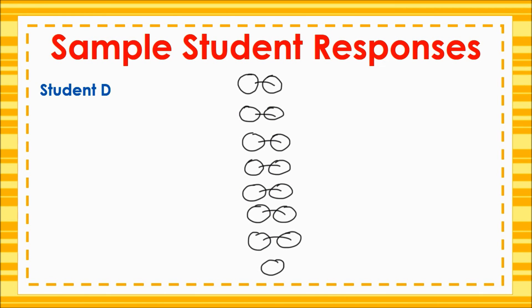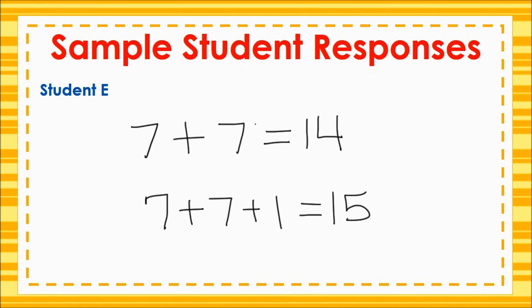Student D says: I drew 15 circles. I matched one on the left with one on the right. I have one circle left over, so I know that 15 is an odd number. Student E says: I know that 7 plus 7 equals 14, so 14 is an even number. 15 is 7 plus 7 plus 1, so 15 is an odd number.